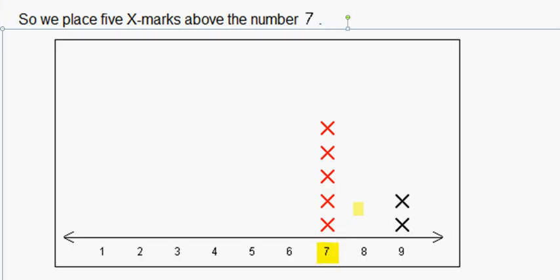Here. So we have 1, 2, 3, 4, 5 X marks for the five 7's, and we put them above the 7 in our line plot.